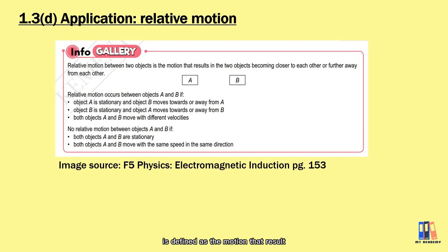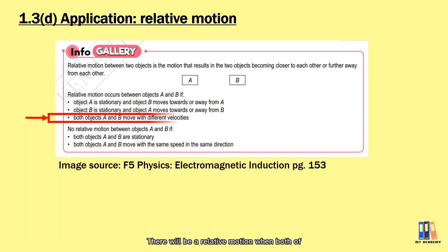Relative motion is defined as the motion that results in two objects becoming closer or further away from each other. There will be relative motion when both objects are moving with different velocities.